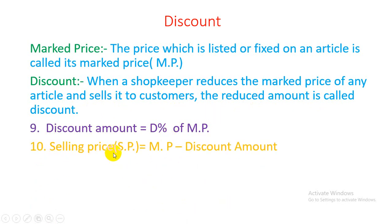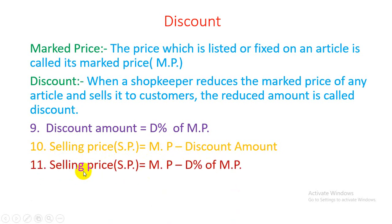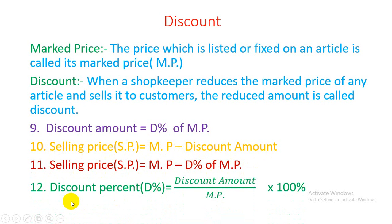Selling price (SP) = MP − discount amount, or SP = MP − discount percent of MP. Discount percent (D%) = (discount amount / MP) × 100%.